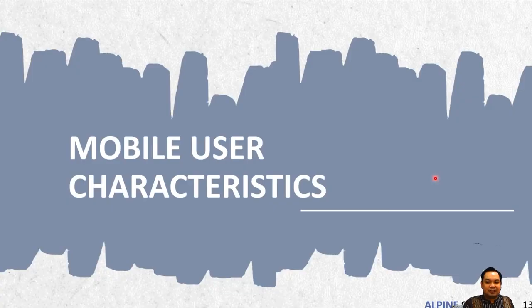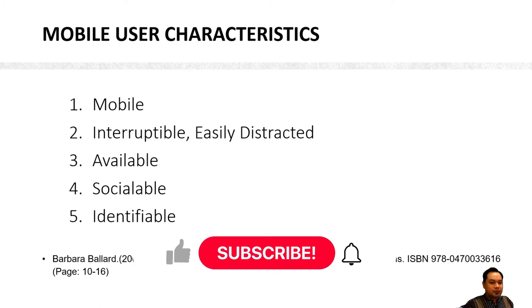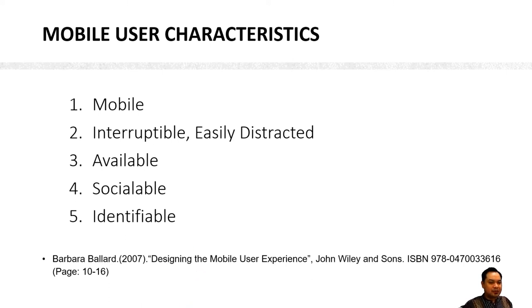Next we look at mobile user characteristics. In mobile user characteristics we have: mobile, interactable, easily distracted, available, sociable, and identifiable. This mobile user characteristics framework is extracted from Barbara Bellard's book, "Designing the Mobile User Experience" from John Wiley & Sons.